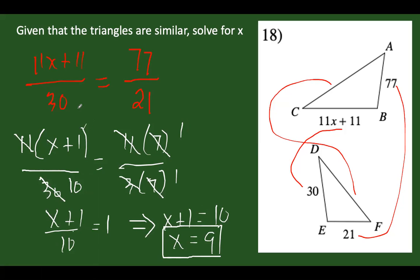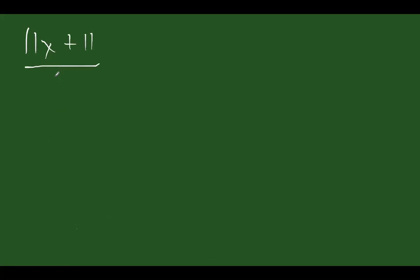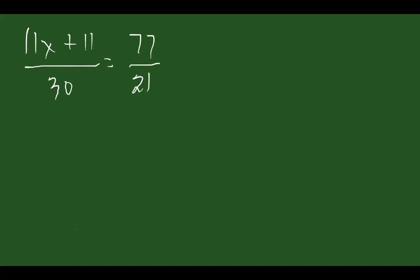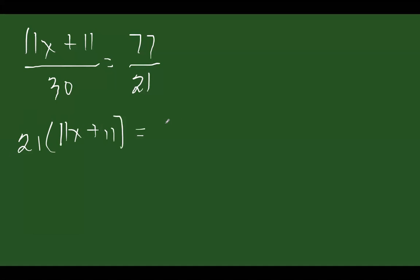Now let's solve it without using the cancellation method, to compare. Starting from: 11x plus 11 over 30 equals 77 over 21. Doing cross multiplication: 21 times (11x plus 11) equals 77 times 30. We're dealing with very large numbers here, so let's simplify — divide by 7, giving 11 and 3, and by 3 giving 10.